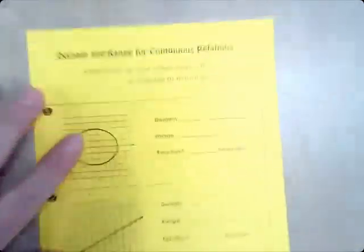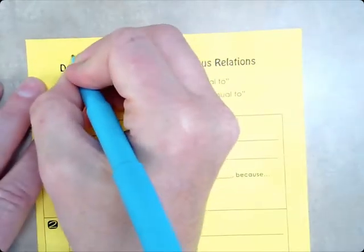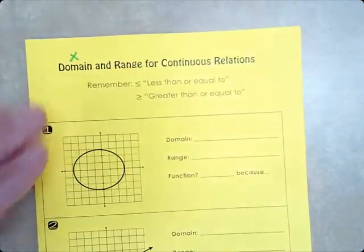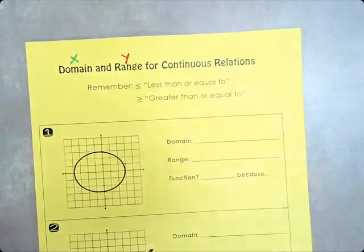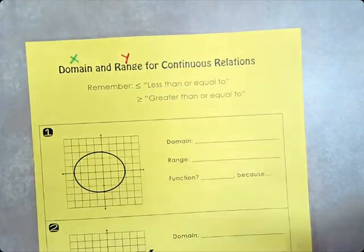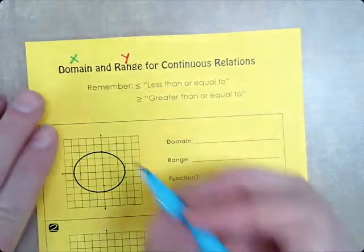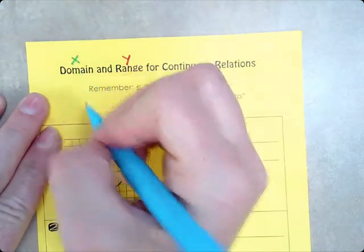So, as a reminder, domain is x, and range is y. Everything that I do with range is going to be pink. Everything that I do with domain is going to be blue.